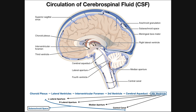CSF in the third ventricle moves through the cerebral aqueduct — the thin region traversing between the two halves of the midbrain, between the anterior portion and the corpora quadrigemina posteriorly. CSF travels from the third ventricle through the cerebral aqueduct and finally into the fourth ventricle, which is located between the cerebellum and the pons.